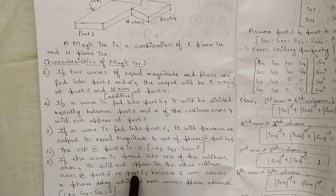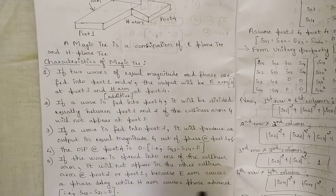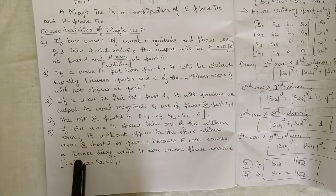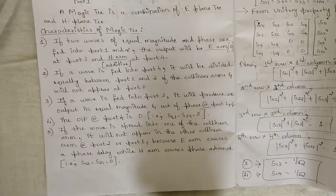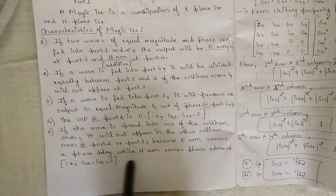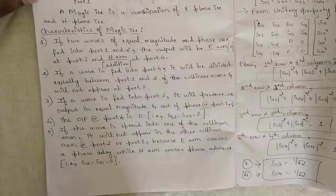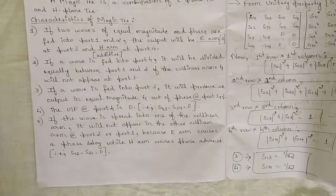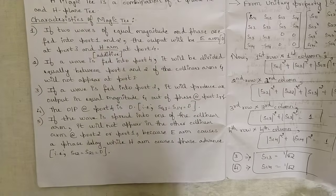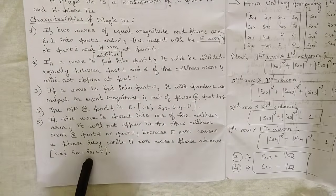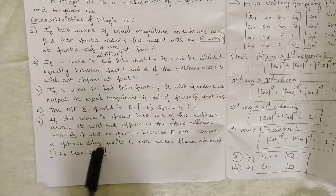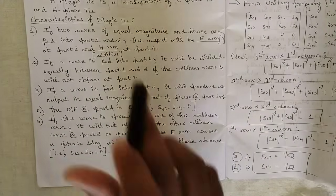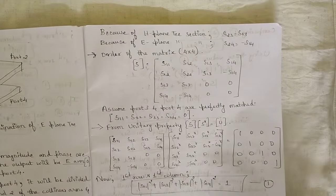Characteristic five: if a wave is fed into one of the collinear arms, it will not appear in the other collinear arm, because the E-arm causes a phase delay while the H-arm causes a phase advance. Therefore s12 equals s21 equals 0. Note this is a conditional result and may not hold in all parameters. Please note down all these characteristics.